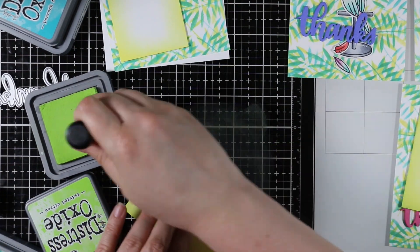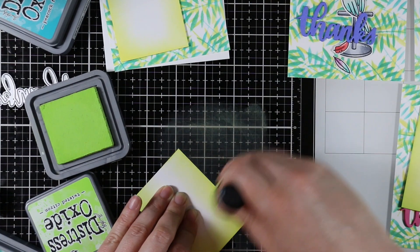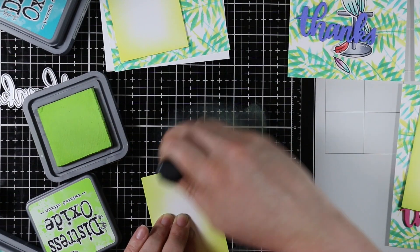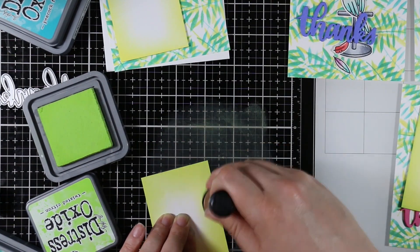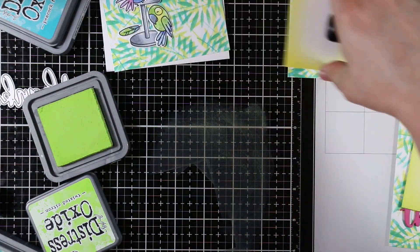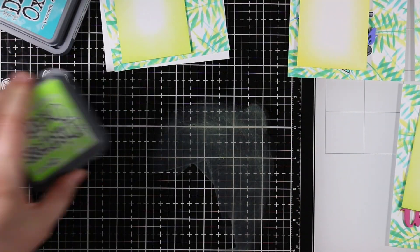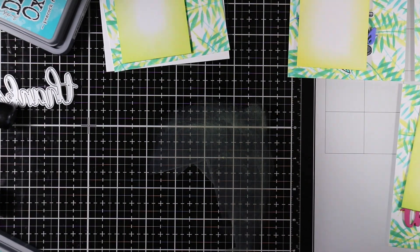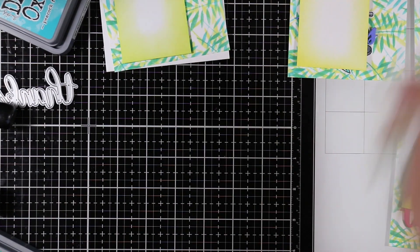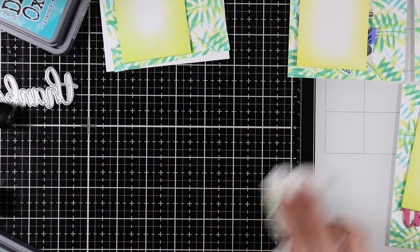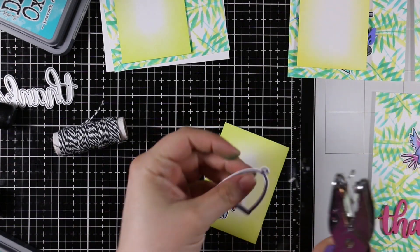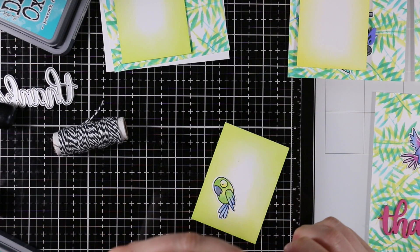I sponged two of them with the Squeezed Lemonade distress oxide ink and this is where sponging off the glass mat really shows. I just get a smoother blend. Tim Holtz wasn't joking when he said it's a complete game changer when you sponge off of glass versus working on a craft mat. Two I did with the Squeezed Lemonade, two I did with Twisted Citron.